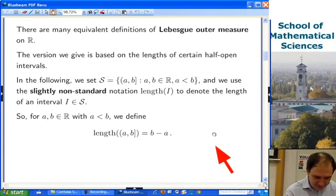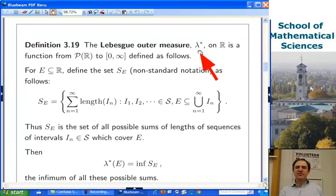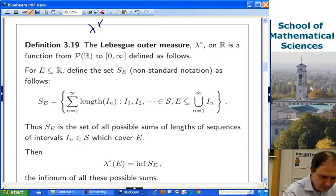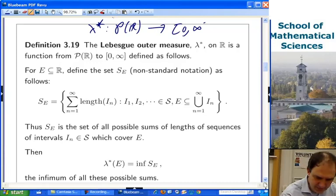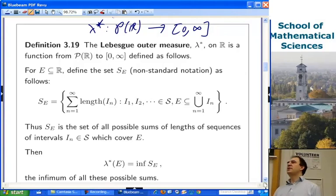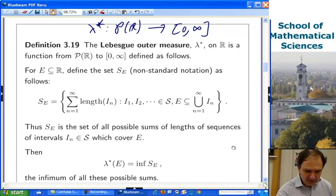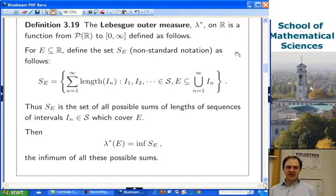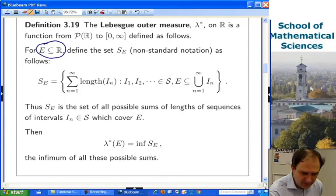So what is Lebesgue outer measure? Lambda star, called Lebesgue outer measure on R, it's actually defined on all the subsets of R. So lambda star is actually a function from P of R taking values in the non-negative extended real line. And it's going to be the best we can do as a notion of the length of a set. Now I'm going to chop up the definition into bits, but I'll give you the full definition in one go at the end. And I'll explain what we're doing as we go. So what's going on? Using a bit of non-standard notation just to try and simplify things. I'll start with my set E, a subset of the real line, whose total length we're going to try to measure.